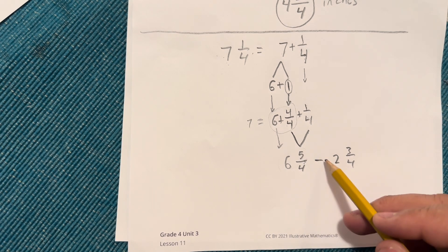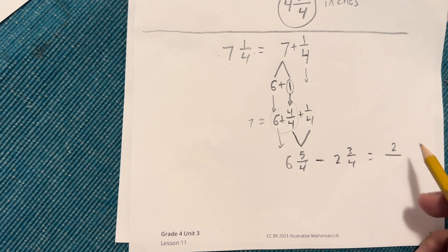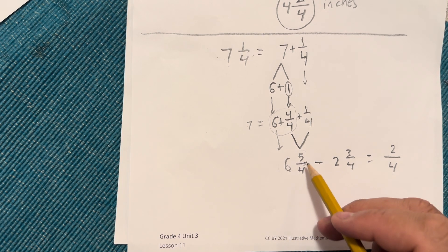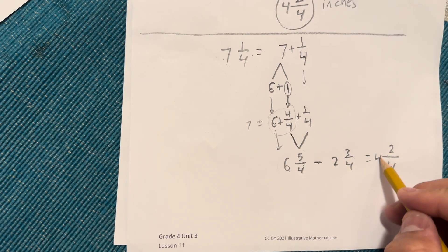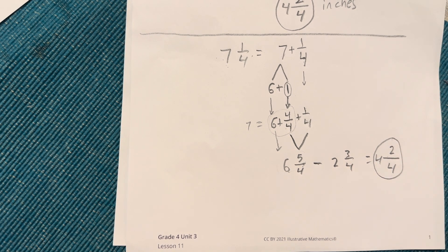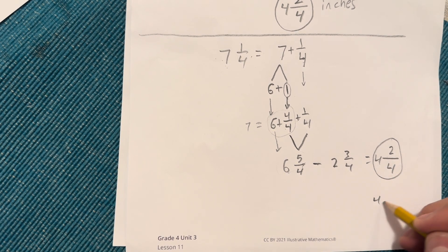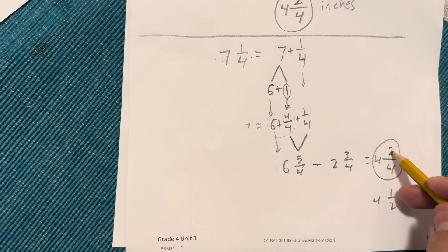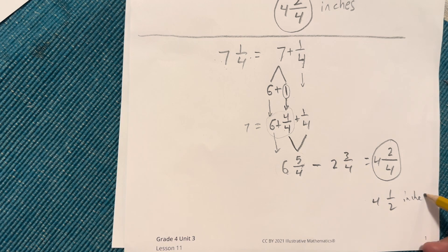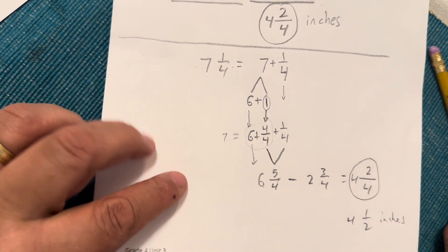Five minus three is two, we keep the same denominator of four, and then we subtract the whole numbers: six minus two is four. Our final answer is four and two-fourths inches. We can also say this is four and a half inches, because two-fourths is an equivalent fraction to one-half. Alright, very good class — I hope you were able to understand that.